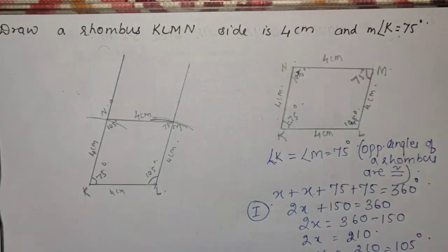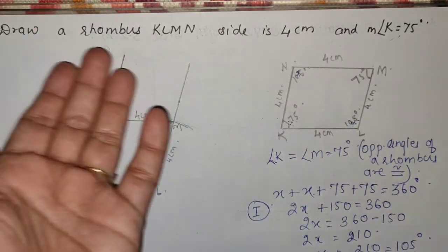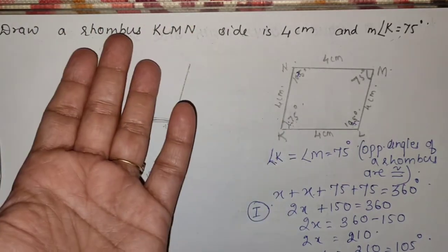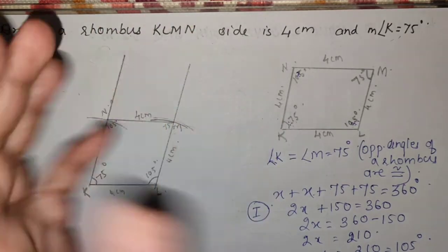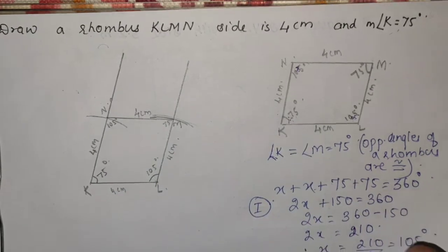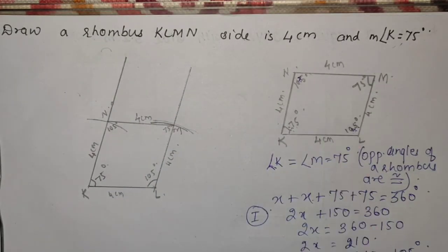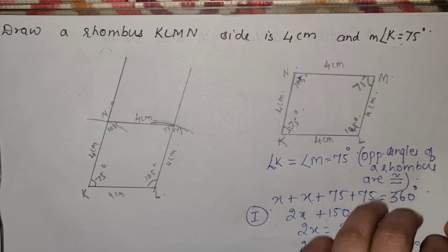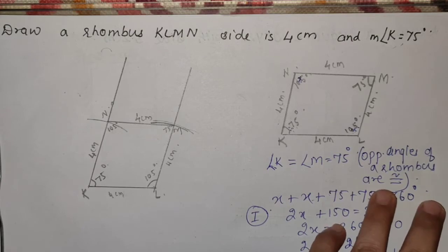इस तरह rhombus draw करना है। अगर teacher को property नहीं मालूम होती तो teacher draw नहीं कर पाते। तो अगर आपको भी property नहीं आती तो आपको भी नहीं आएगा। सबसे main चीज़ है — आपको सभी quadrilaterals की property याद होनी चाहिए। Is that clear? Now we will move to the next sum.